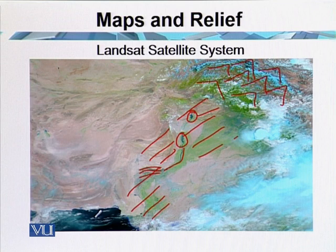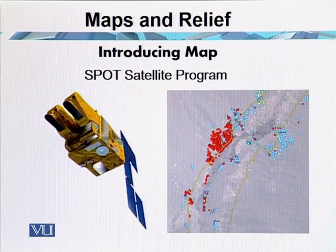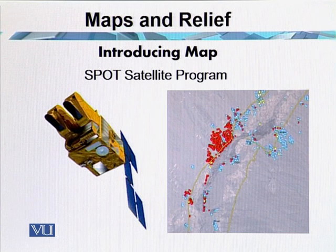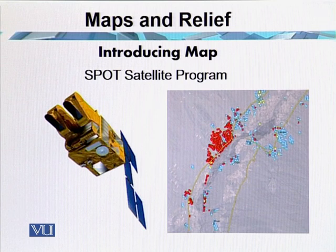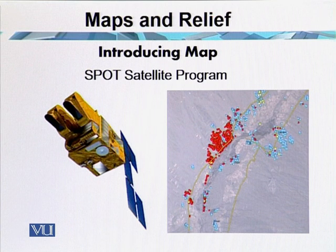This picture was taken by the Landsat satellite system. Now SPOT is a commercial high resolution optical imaging earth observation satellite system operating from space. It is run by SPOT Image. SPOT 1 was launched on December 31, 1990, and SPOT 5 in May 2002 with 2.5 meter resolution.